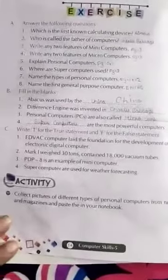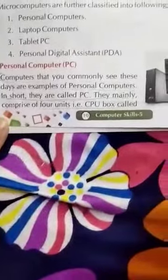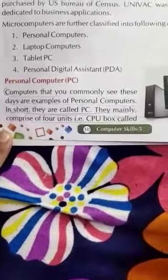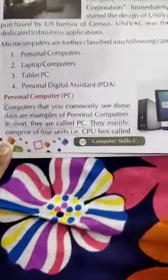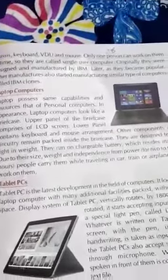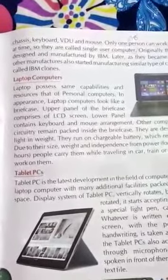Question number 5: Explain personal computer. Computers that you commonly see these days are examples of personal computers. They are mainly comprised of four units: CPU box, keyboard, video display, and mouse. Only one person can work on them at a time, so they are called single user computers.